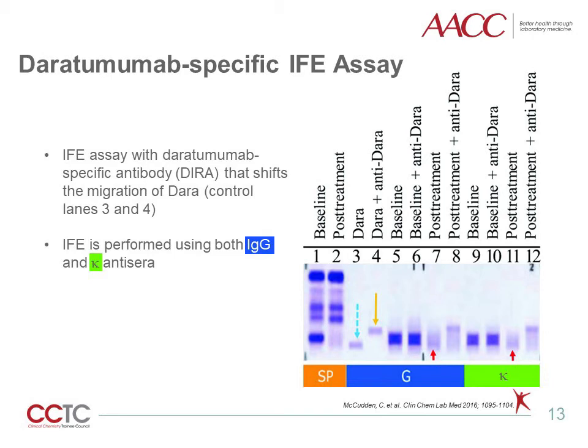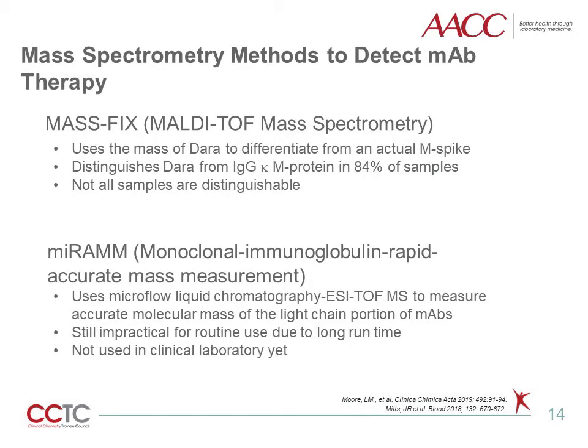DERA is limited in that the assay is only designed to distinguish daratumumab and not other monoclonal antibody therapeutics. An alternative is MALDI-TOF mass spectrometry, also known as MassFIX. Based on the mass of daratumumab, the technique can distinguish daratumumab from the patient's endogenous M protein. However, this technique is still prone to false-negative results for approximately 16% of patient samples, as shown in a study by Moore et al. in 2019. MassFIX therefore cannot distinguish all samples because of poor resolution of a linear MALDI-TOF instrument.